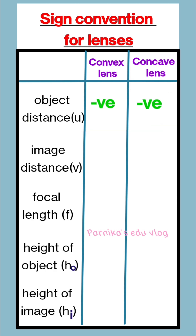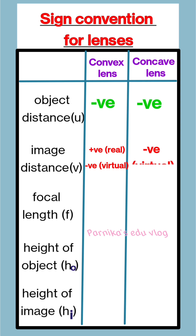Image distance v is positive for real images and negative for virtual images. And here, for the concave lens, images are virtual so it is negative.